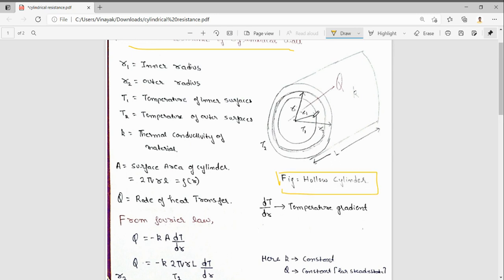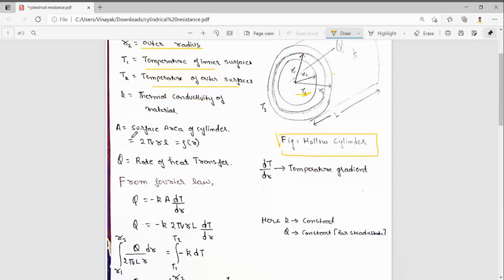R1 is the inner radius, R2 is the outer radius, and T1 is the temperature of the inner surface. T2 is the temperature of the outer surface, K is the thermal conductivity of the material, and A equals the surface area of the cylinder.